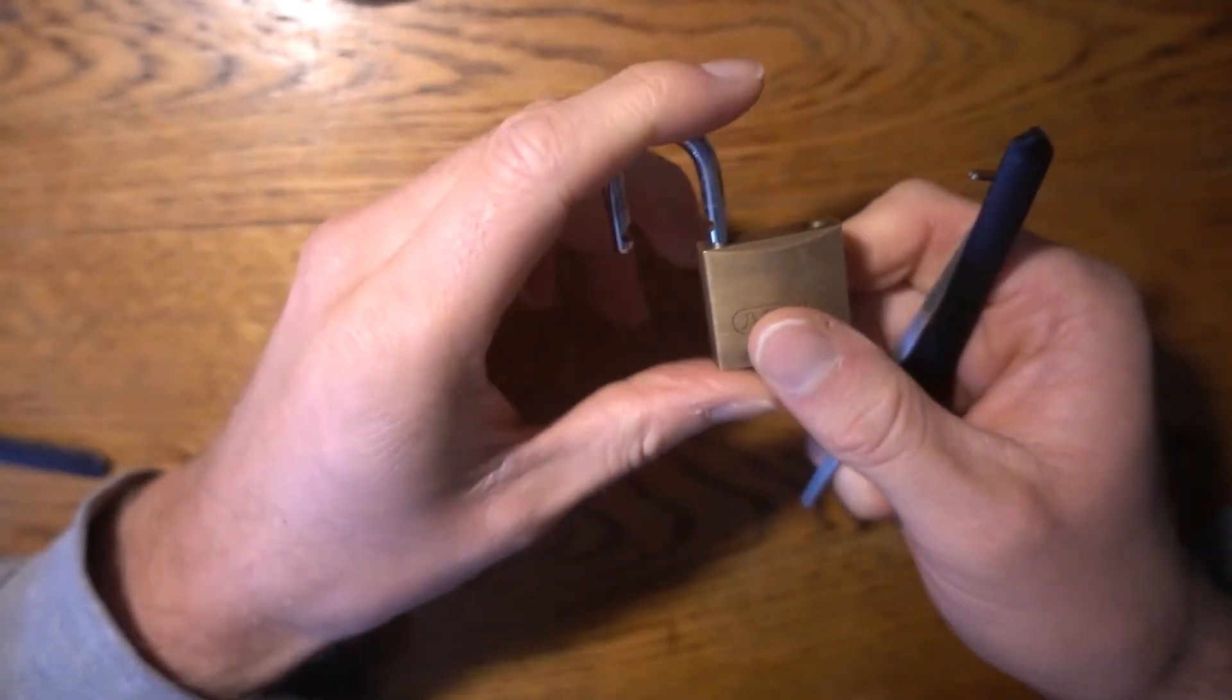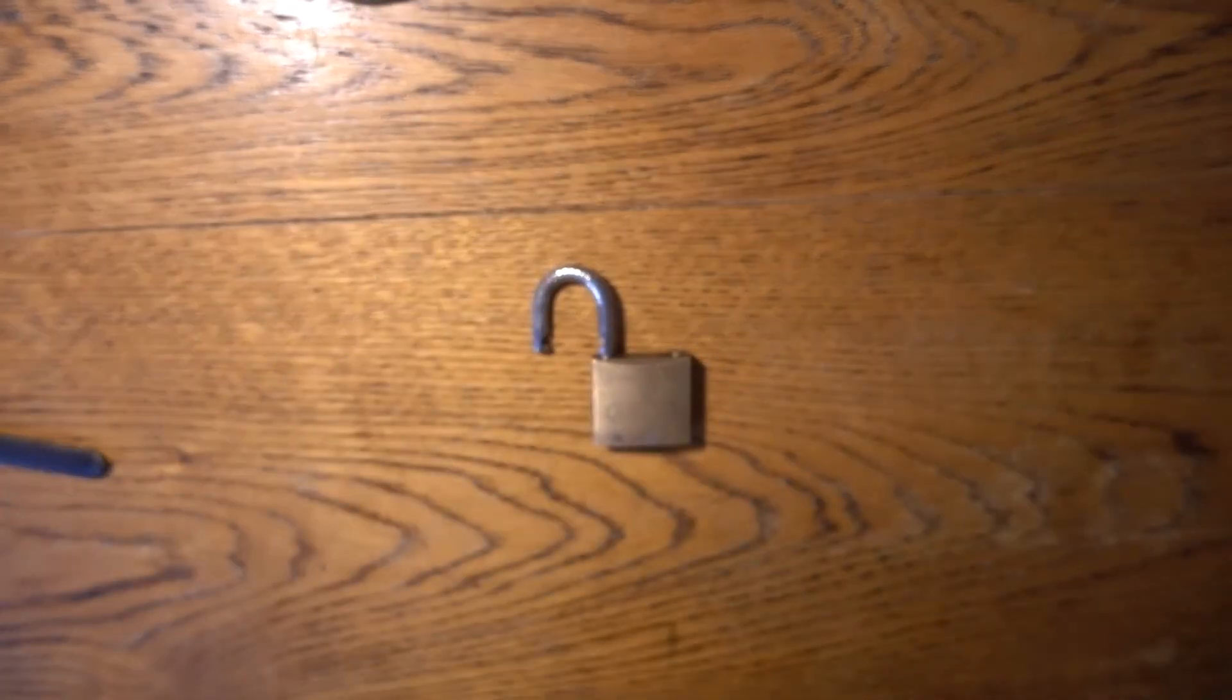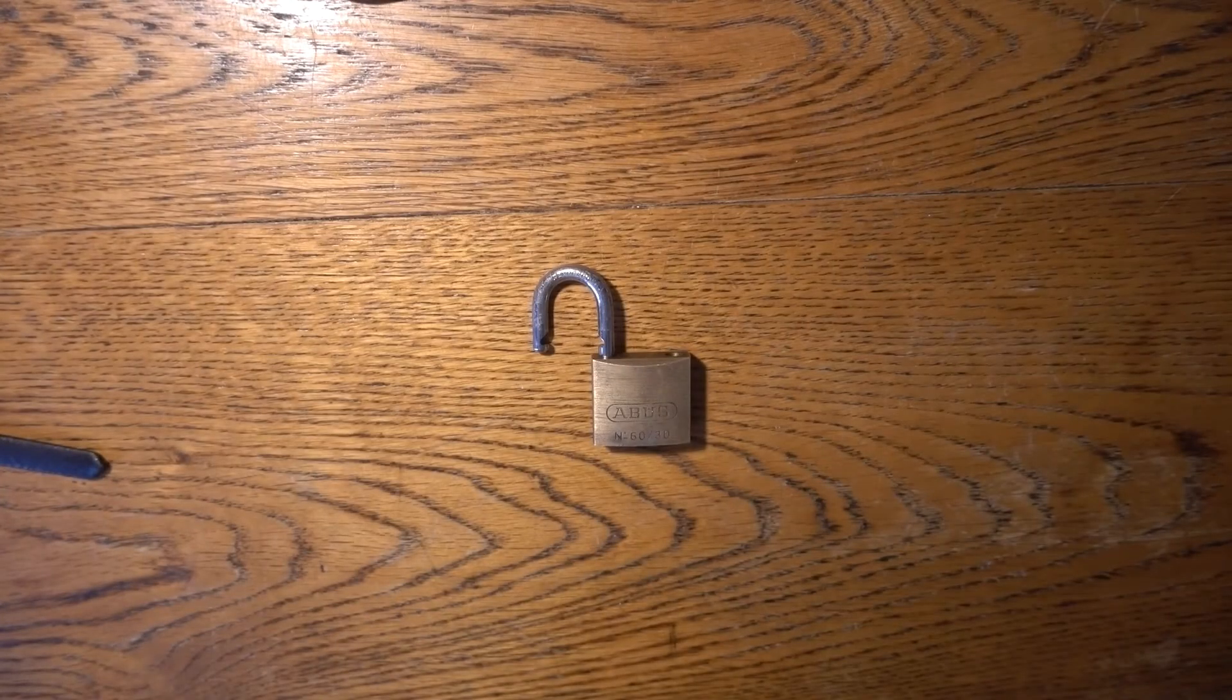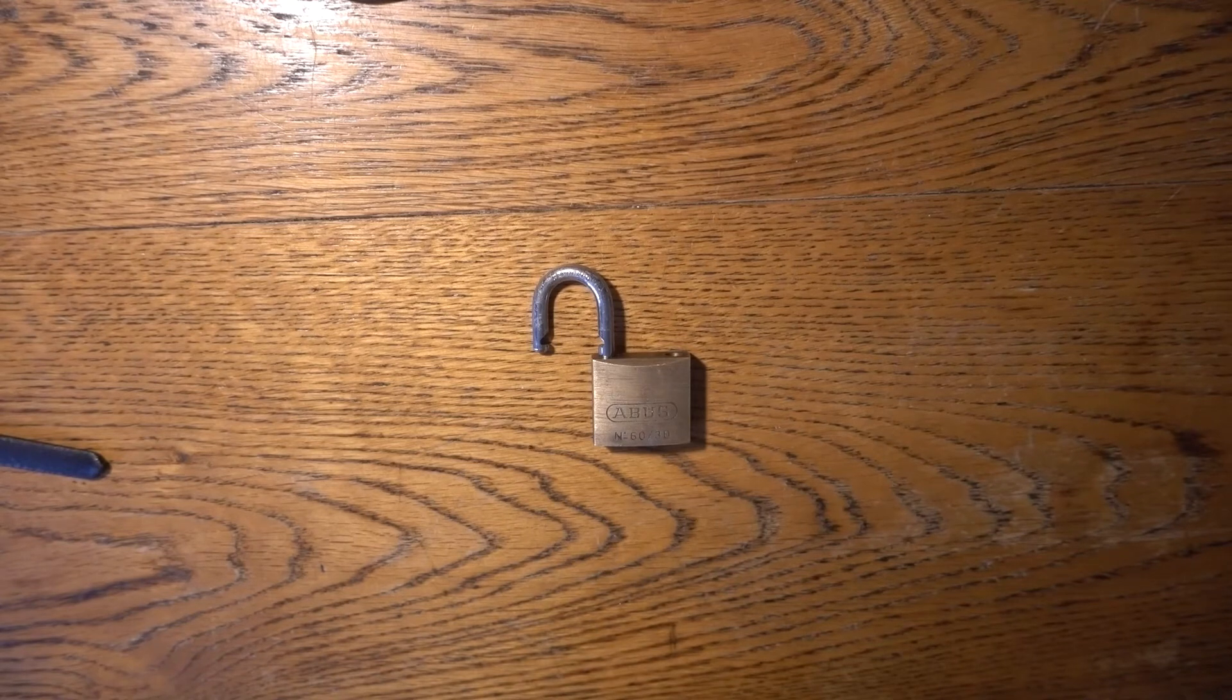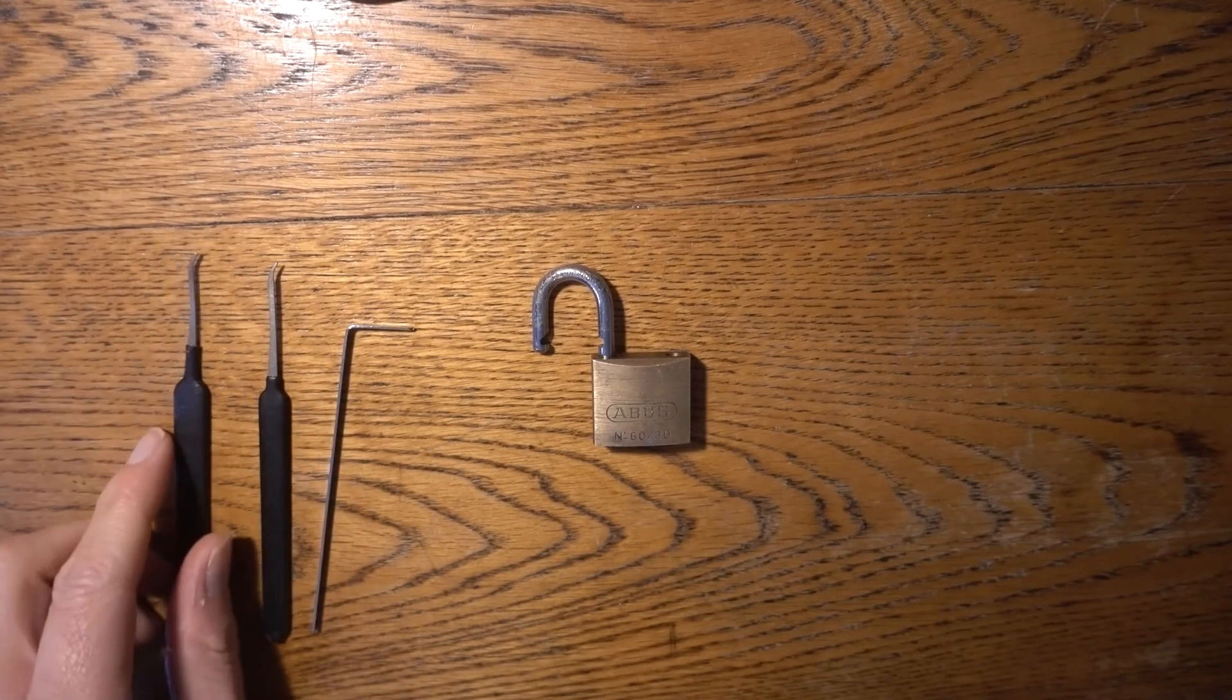Anyway, it took me a little bit longer than usual for a very easy padlock to pick, but that is the Abus N60x30, picked with the Sparrows standard hook, I believe.